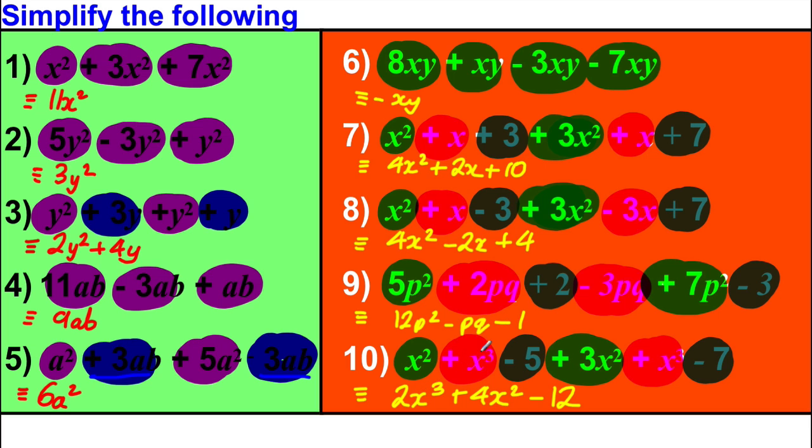4x squared plus 2x plus 10, 4x squared subtract 2x plus 4, 12p squared subtract pq subtract 1, and lastly we had ourselves 2x cubed plus 4x squared subtract 12. Just notice I wrote the x cubed first—it's usually better practice to write the highest x power first and go down the x powers to the number. Now that's all we've got for this video. That's everything you need on collecting like terms. Thanks very much for watching.